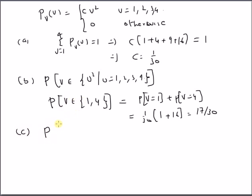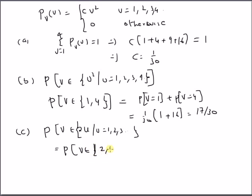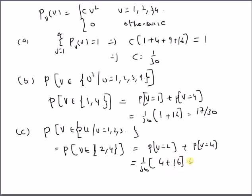Next, we want to find the probability that v is an even number, i.e., v belongs to {2u : u = 1, 2, 3, …}. Since the only even values possible for this PMF are 2 and 4, we compute P(v = 2) + P(v = 4) = (1/30)(2²) + (1/30)(4²) = (1/30)(4 + 16) = 20/30 = 2/3.